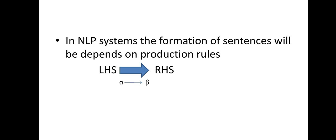In an NLP system, sentence formation depends on production rules. For natural language processing, a big list of rules is followed. This can be represented in two forms: LHS produces RHS, or alpha produces beta, where alpha and beta are the ingredients of the language - that is, terminal and non-terminal symbols.